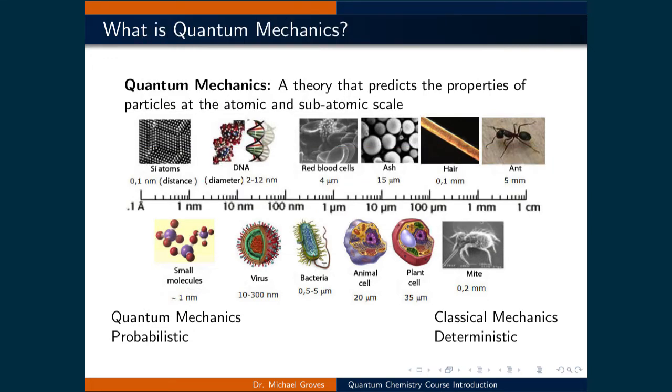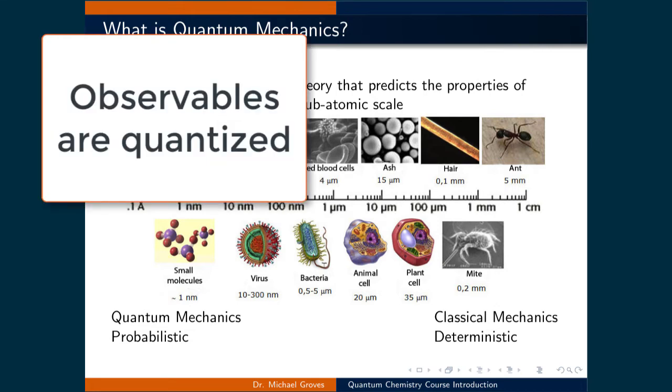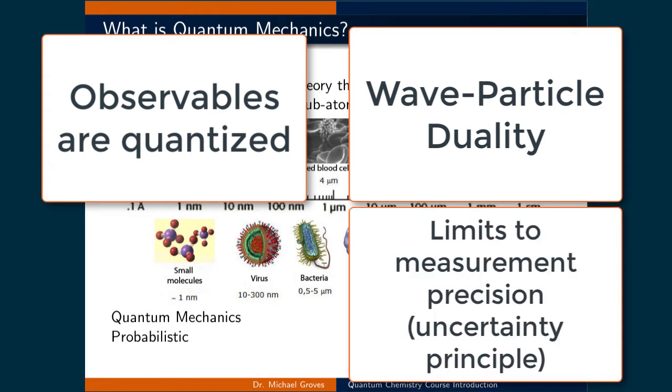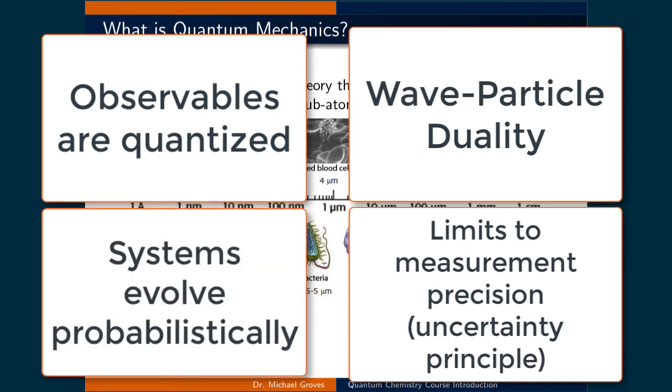According to quantum mechanics, the state of the system is quantified using metrics such as its energy and momentum. However, these quantities may be restricted to discrete values. This is called quantization. Furthermore, according to this theory, objects have characteristics of both particles and waves, meaning that there is a wave-particle duality, and there are limits to the precision with which quantities can be known, and these are predicted by the uncertainty principle. Finally, the evolution of the properties of quantum mechanical systems operate probabilistically. We will cover all of these non-intuitive topics as we progress through the course.